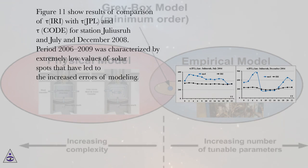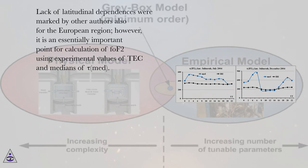Figure 11 shows results of comparison of tau IRI with tau JPL and tau CODE for station Julius Rue in July and December 2008. Period 2006 to 2009 was characterized by extremely low values of solar spots that have led to increased errors of modeling. Lack of latitudinal dependences were marked by other authors also for the European region; however, it is an essentially important point for calculation of FOF2 using experimental values of TEC and medians of tau MED.